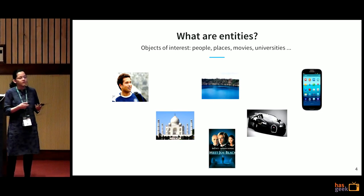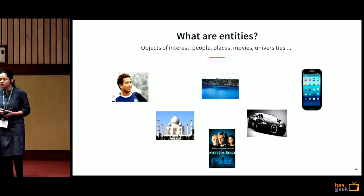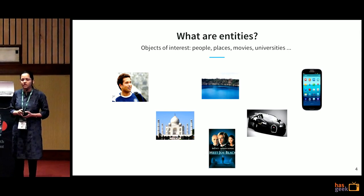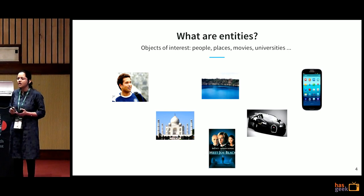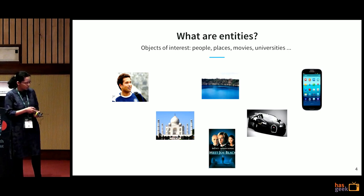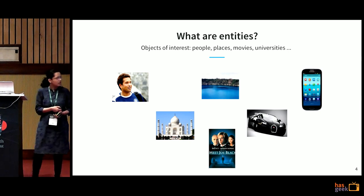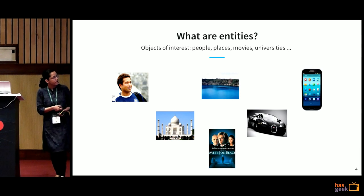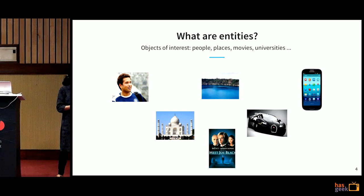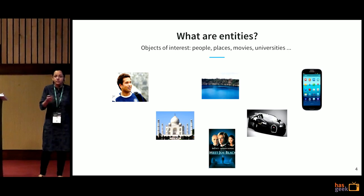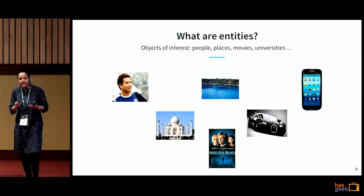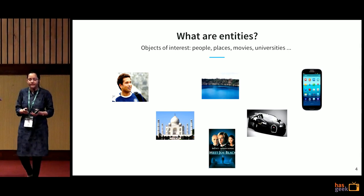The first question is: what are the entities I am talking about? Simply put, entities are objects of interest. Those could be people like Sachin Tendulkar, those could be locations, movies, monuments, phones, cars, universities and so on — any object of interest.